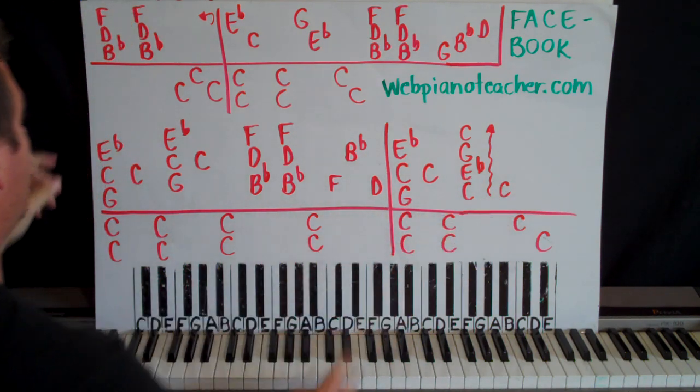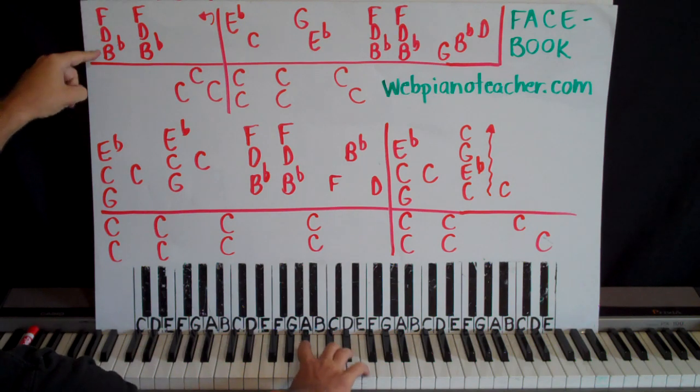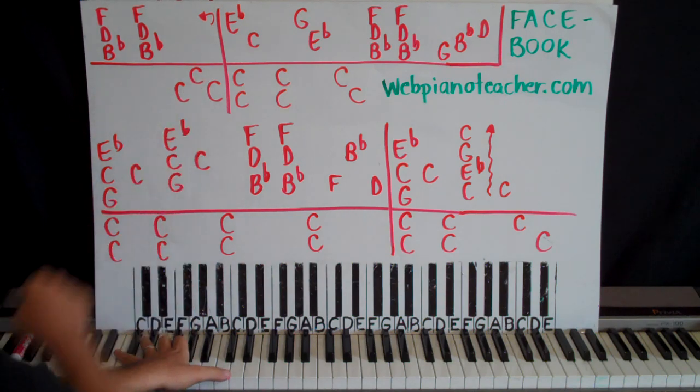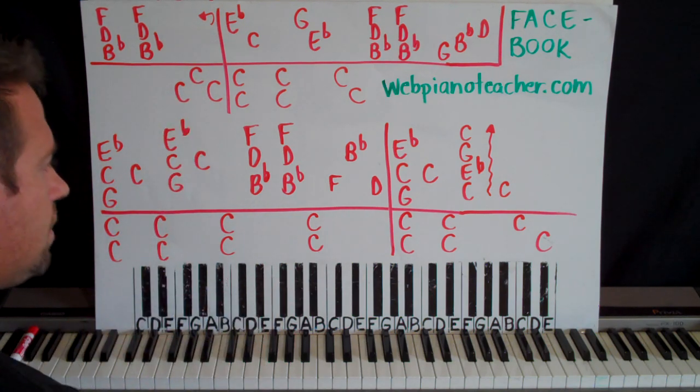And then we're going to play B flat, D, F. This kind of goes with this. I just ran out of room. B flat, D, F. And then play it again. B flat, D, F. And then left hand, C, C, C. So you play the low C, the high one, and then the low C.